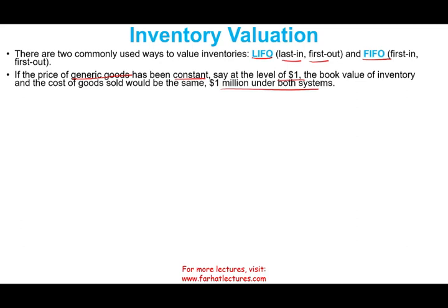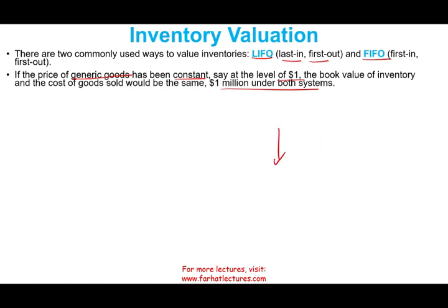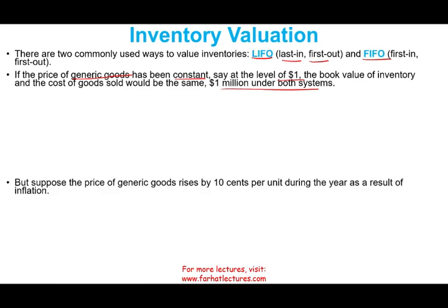We'll illustrate the concept where prices go up, because prices usually have an upward bias. But prices could also go down — whatever I say about prices going up, the opposite is 100% true when it comes to inventory valuation if prices go down.